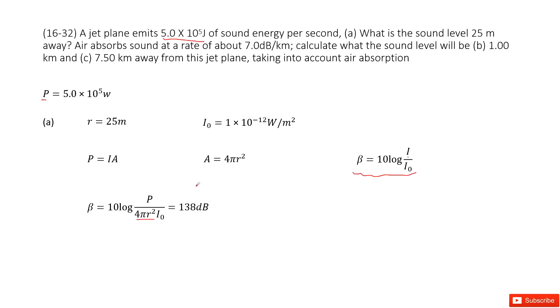P over A, where A is 4πr². Now we get the function for beta. For beta, we can see r is given, I₀ is given, P is given. So we can get the answer.